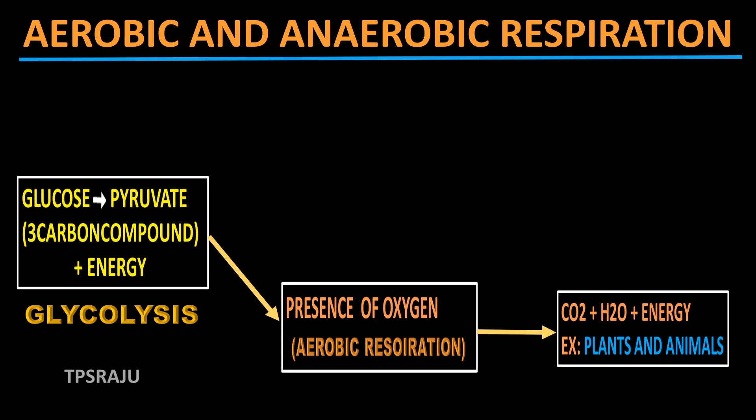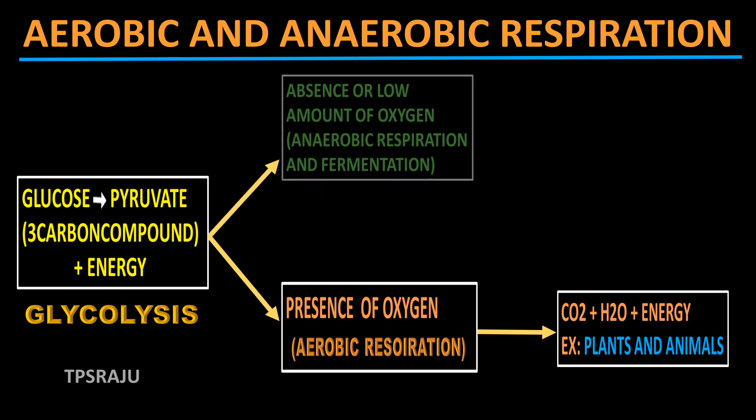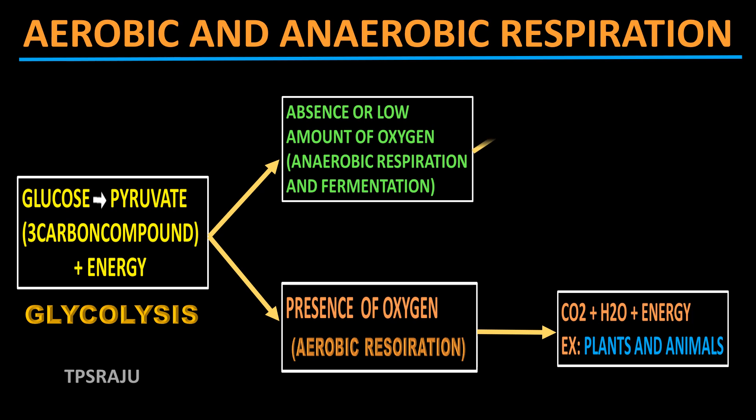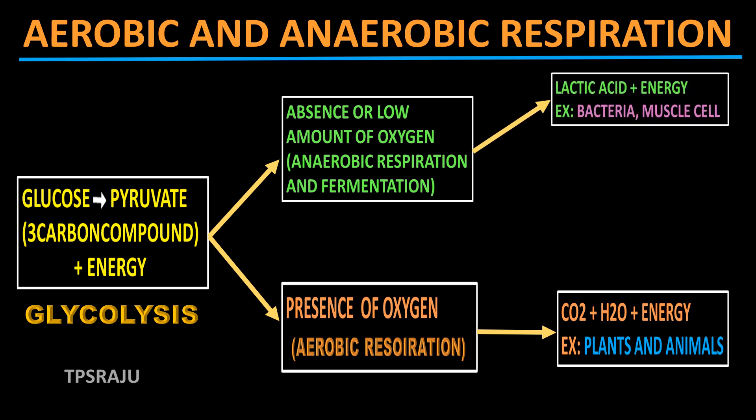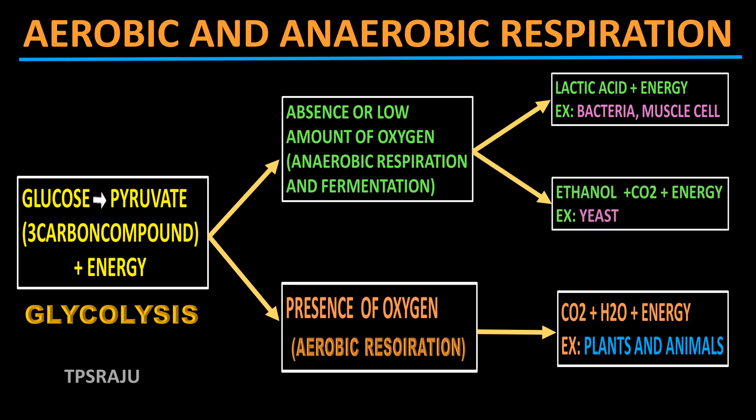In low oxygen conditions, pyruvate breaks down into lactic acid molecules. It occurs in bacteria and sometimes in muscles. In the absence of oxygen, pyruvate breaks down into ethanol and carbon dioxide. Usually, it occurs in yeast. This is fermentation.